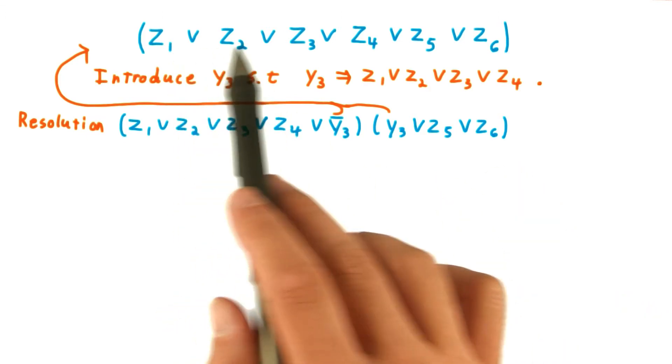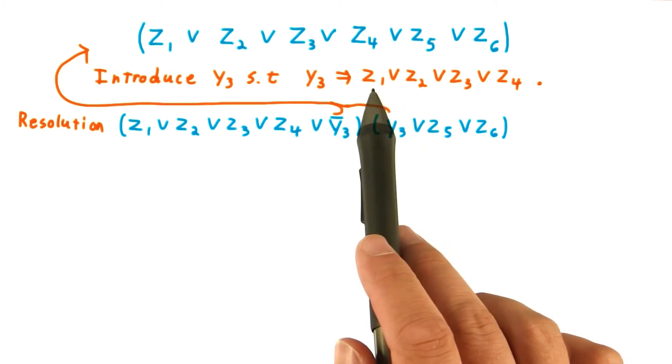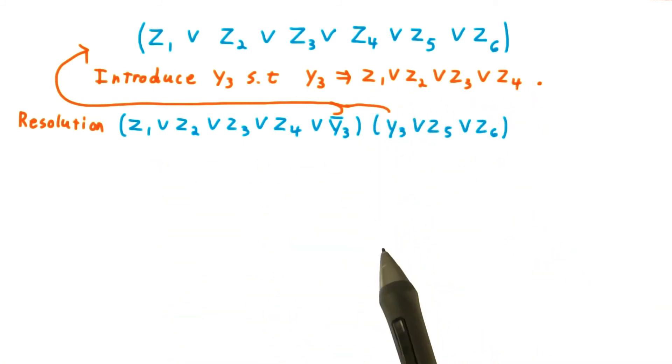Also, if the original clause is satisfied, then we can set Y3 equal to the disjunction of Z1 through Z4, and these two clauses will be satisfied as well.